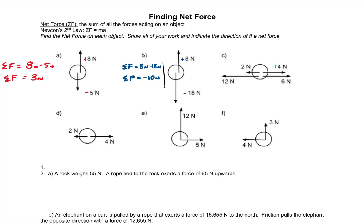For part C, we're going to make all the forces to the right positive — so the 4 newton force is positive and the 6 newton force is positive — and make those forces to the left negative. When we add all of our forces together, the net force is 4 newtons plus 6 newtons minus 2 newtons minus 12 newtons, which comes out to negative 4 newtons.